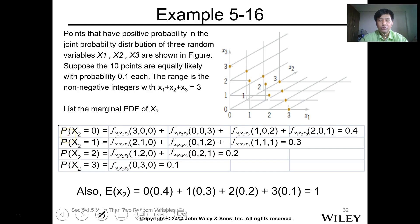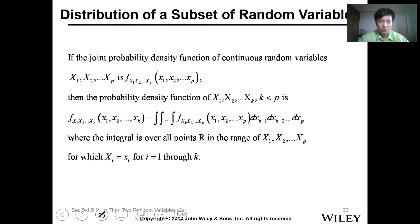Okay everyone, we'll continue with our lesson on joint probability, lesson 0.5. The next topic is on the distribution of subset of random variables.